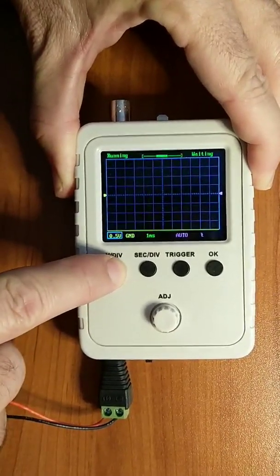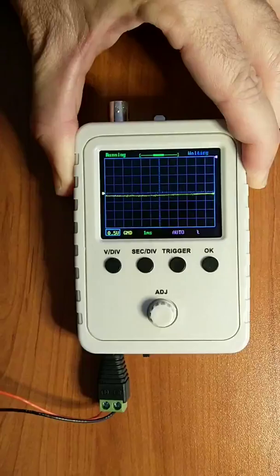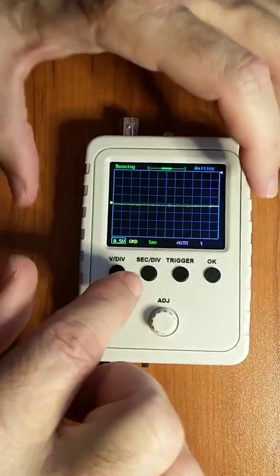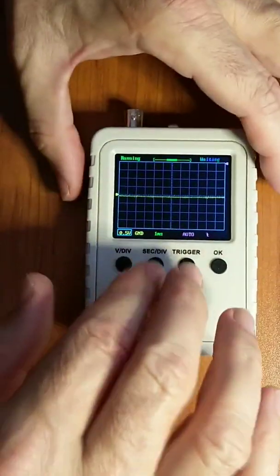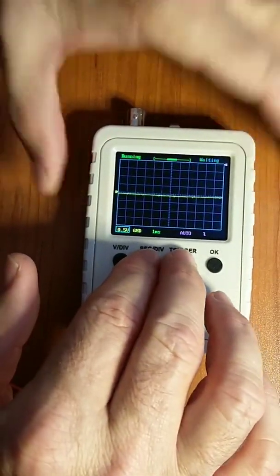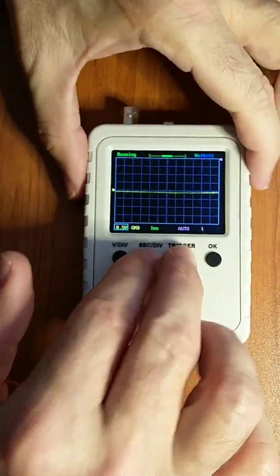One, two, three. Okay, then the second thing you do is press and hold seconds per division and trigger buttons both at the same time for three seconds to reset all other settings to factory defaults. One, two, three.